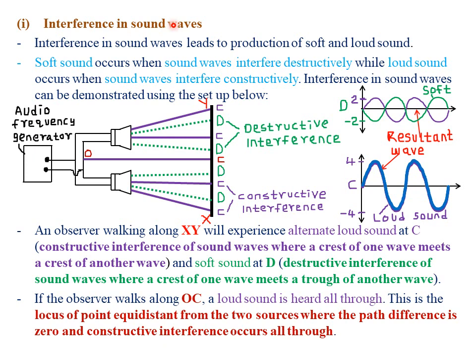Next, we look at interference in sound waves. Interference in sound waves leads to the production of soft and loud sound. Soft sound is sound of smaller volume; loud sound is sound of larger volume. Speakers connected so they produce waves in constructive interference give a much louder sound, while speakers producing destructively interfering waves result in a soft sound.